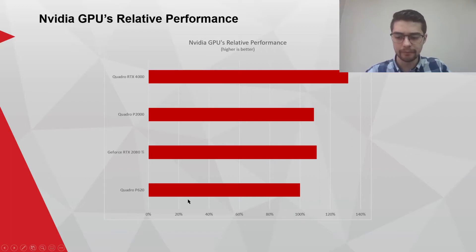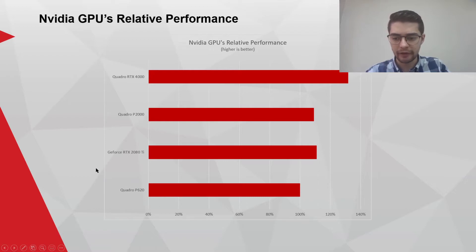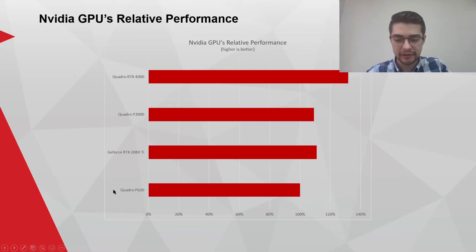I've put everything relative to the P620, so it has a percentage. The P620 is a 5,000 Rand professional graphics card — it's usually the lowest end you can find today — and it performs quite well, especially considering its cost and the number of cores.